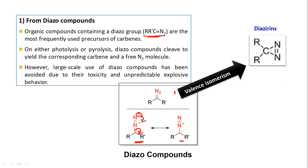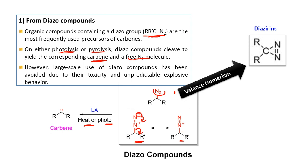For diazo compounds, if we do photolysis or pyrolysis in the presence of a Lewis acid, we are getting carbene, and the nitrogen part will be removed in the form of nitrogen gas. We can apply either heat, photolysis, or pyrolysis in the presence of a Lewis acid to get carbene. These two R groups may be the same or they may be different.